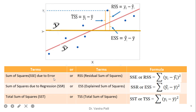Sum of squares due to error, or residual sum of squares. Here, it is nothing but the error between the actual term and predicted value. The actual term is Y and the predicted is Y-cap. We always take the squares of the error. So, the summation of (Y_i minus Y-cap) squared. It may be represented by SSE or RSS.